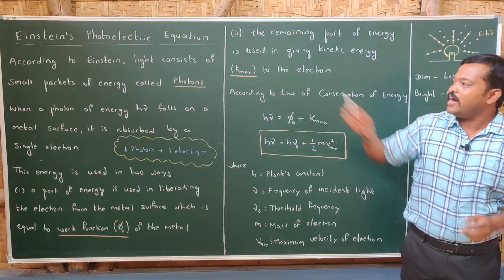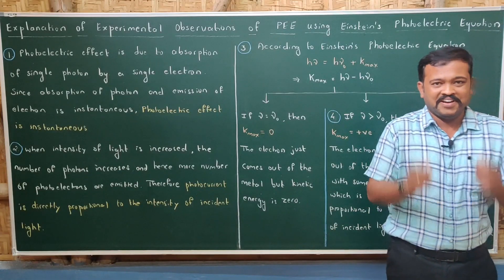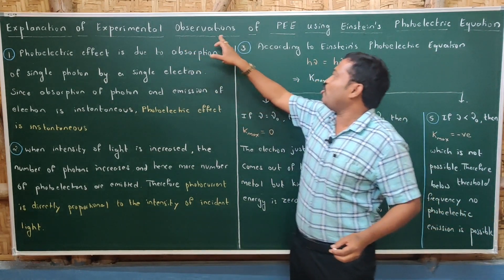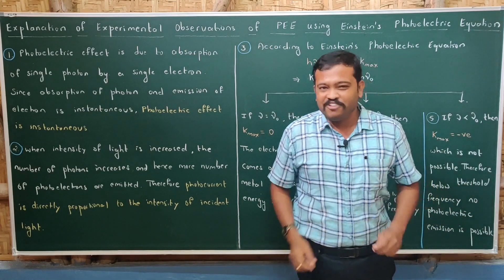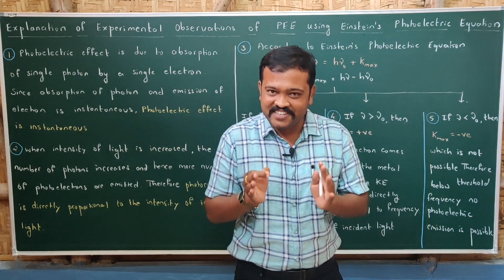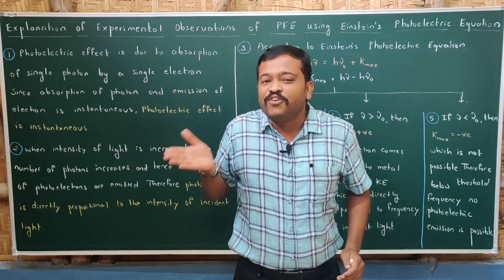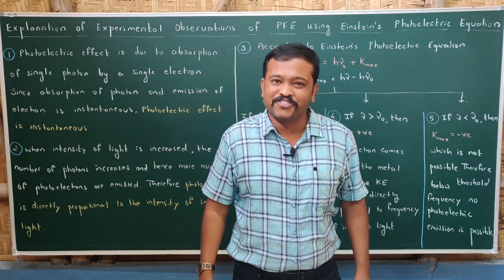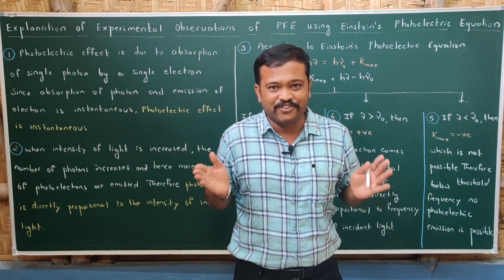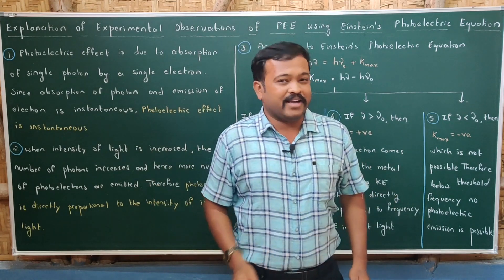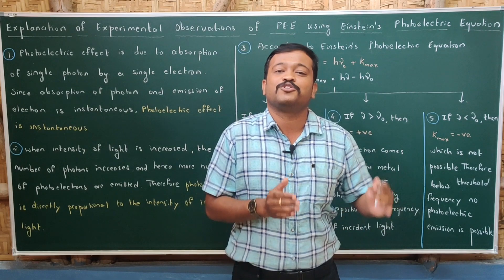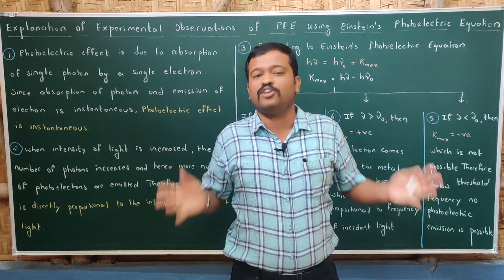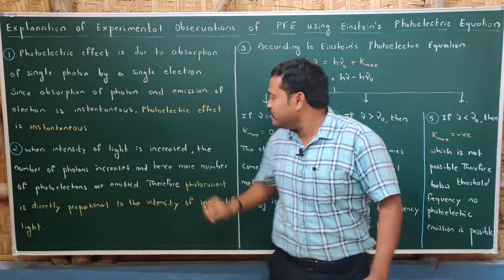Now let us use Einstein's photoelectric equation to explain the experimental observations of the photoelectric effect. We will explain: why photoelectric effect is instantaneous; why photocurrent is directly proportional to the intensity of incident light; why there exists a minimum frequency called threshold frequency below which no photoelectric emission takes place; and why maximum kinetic energy of photoelectrons is directly proportional to the frequency of incident light.